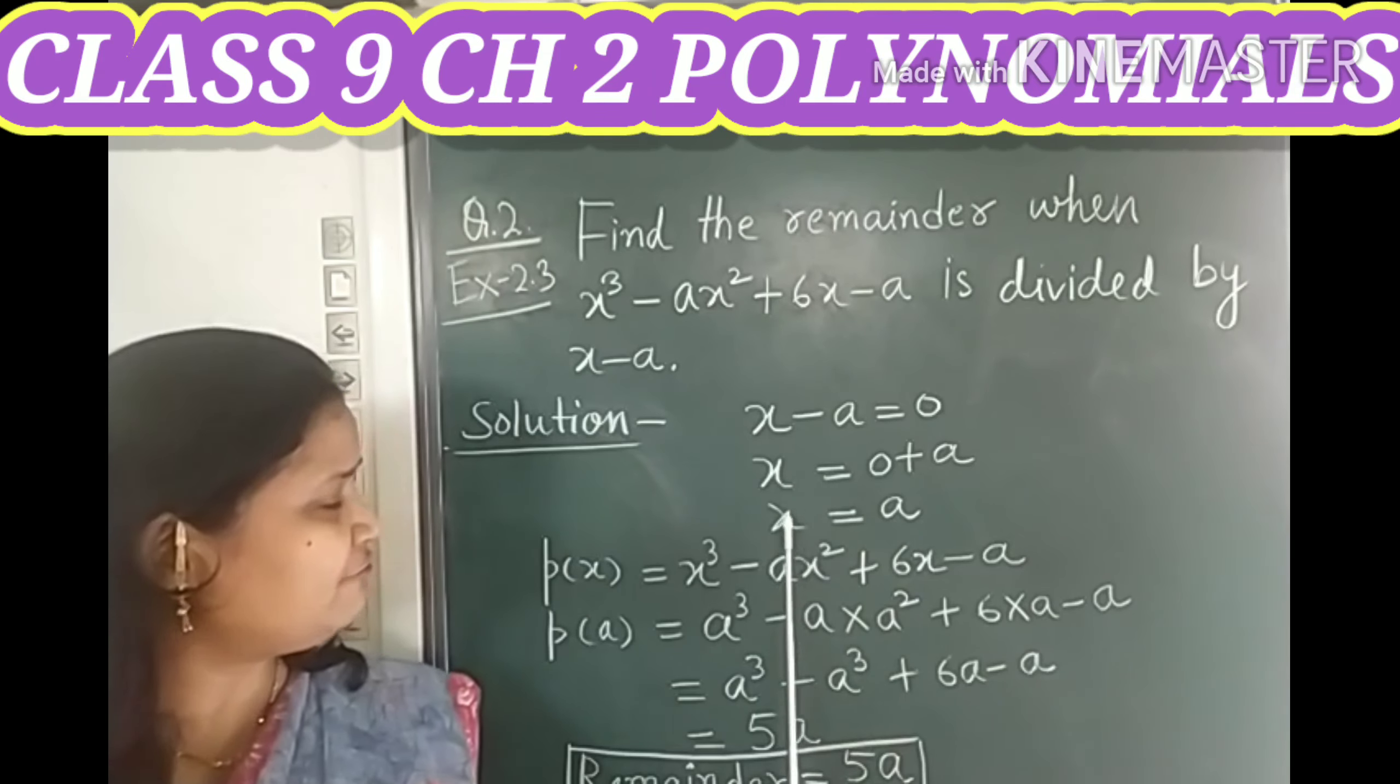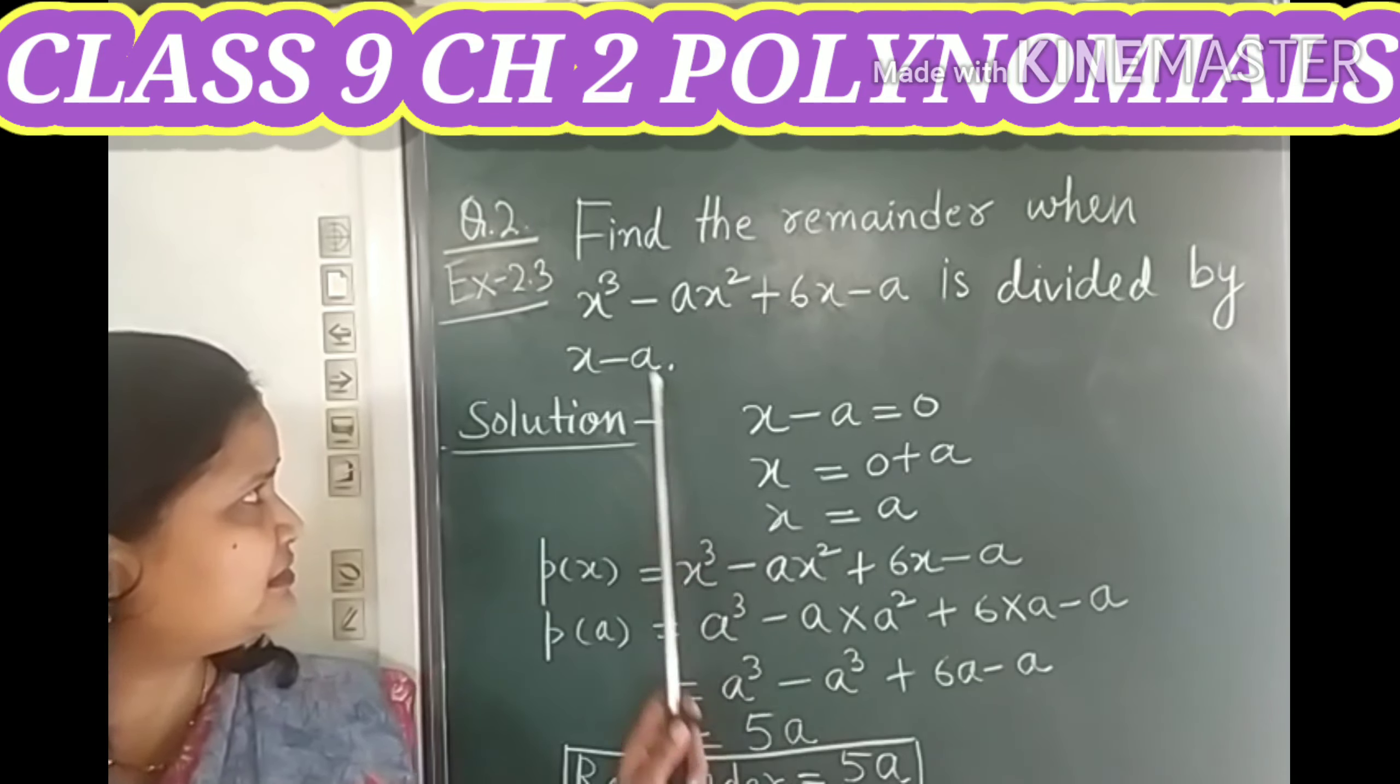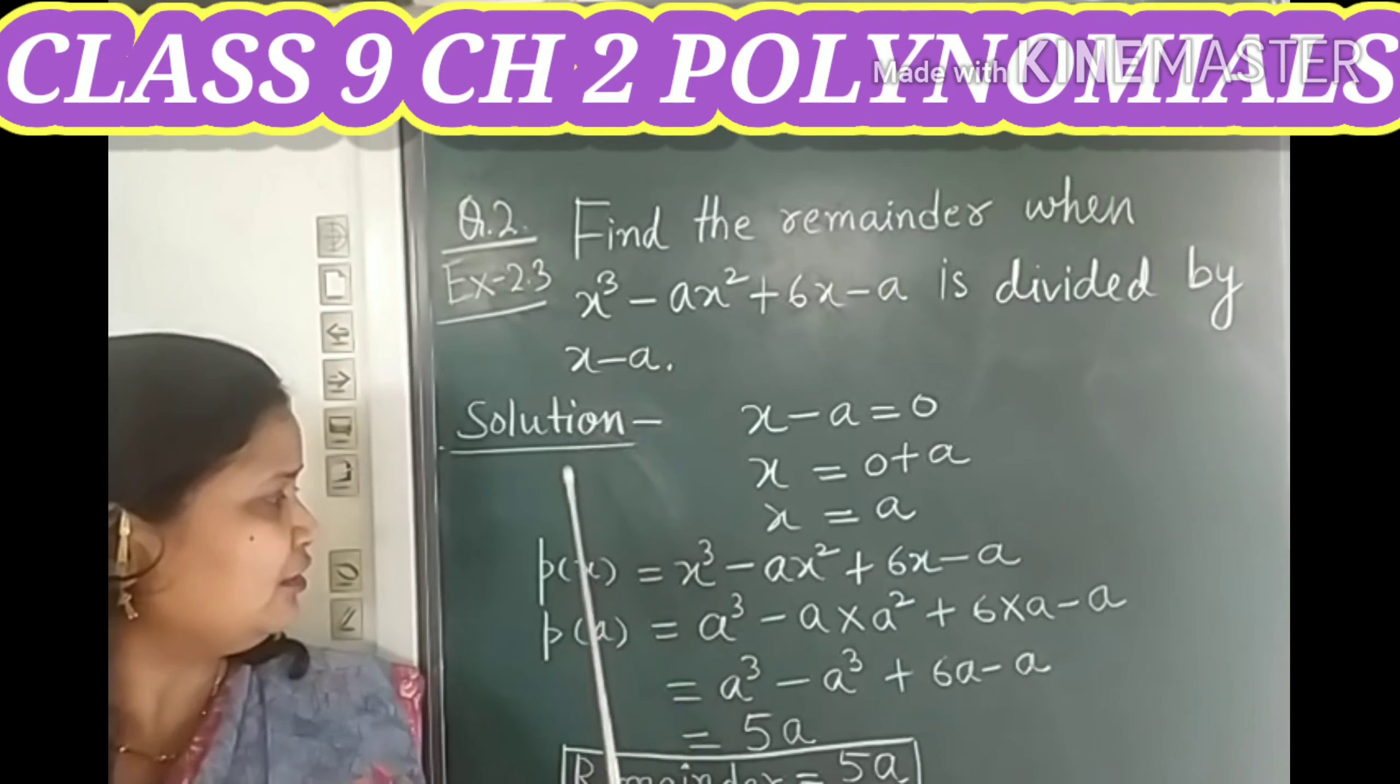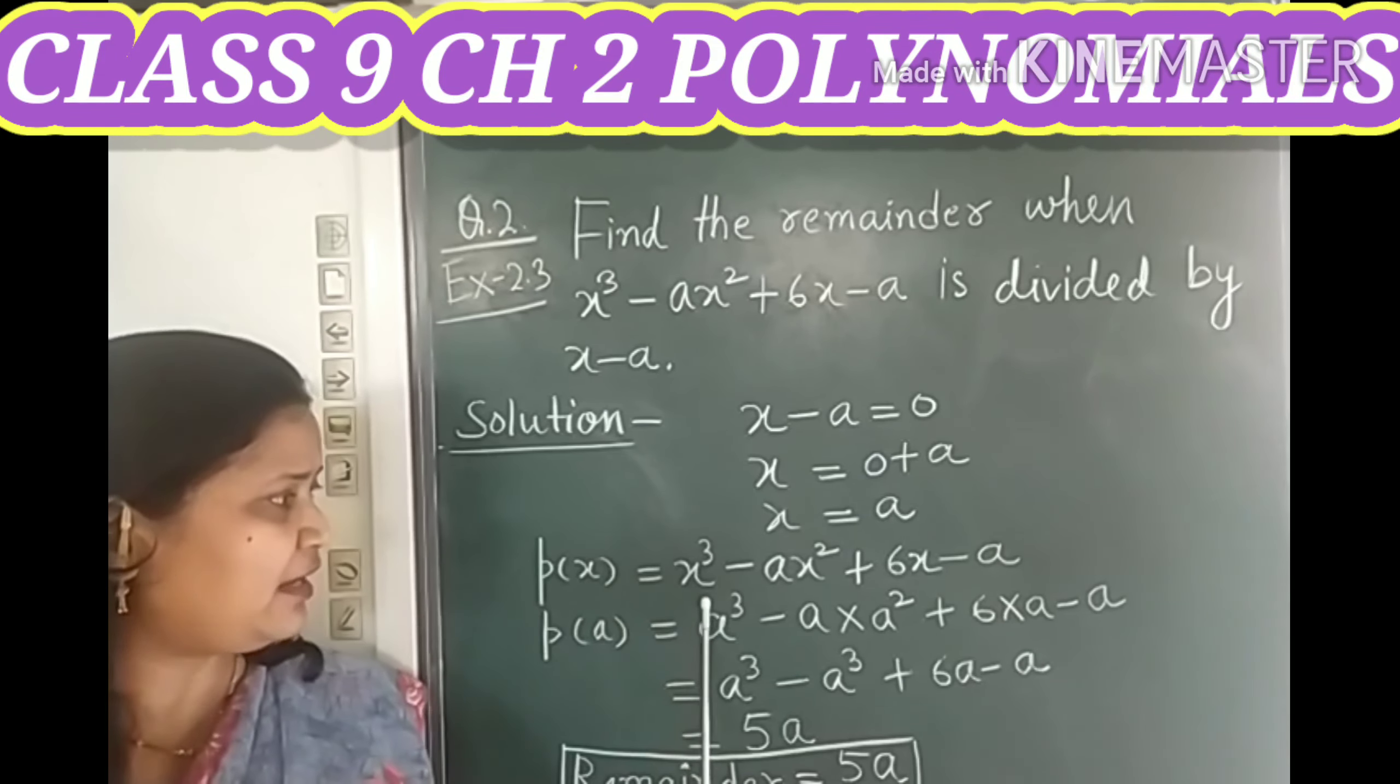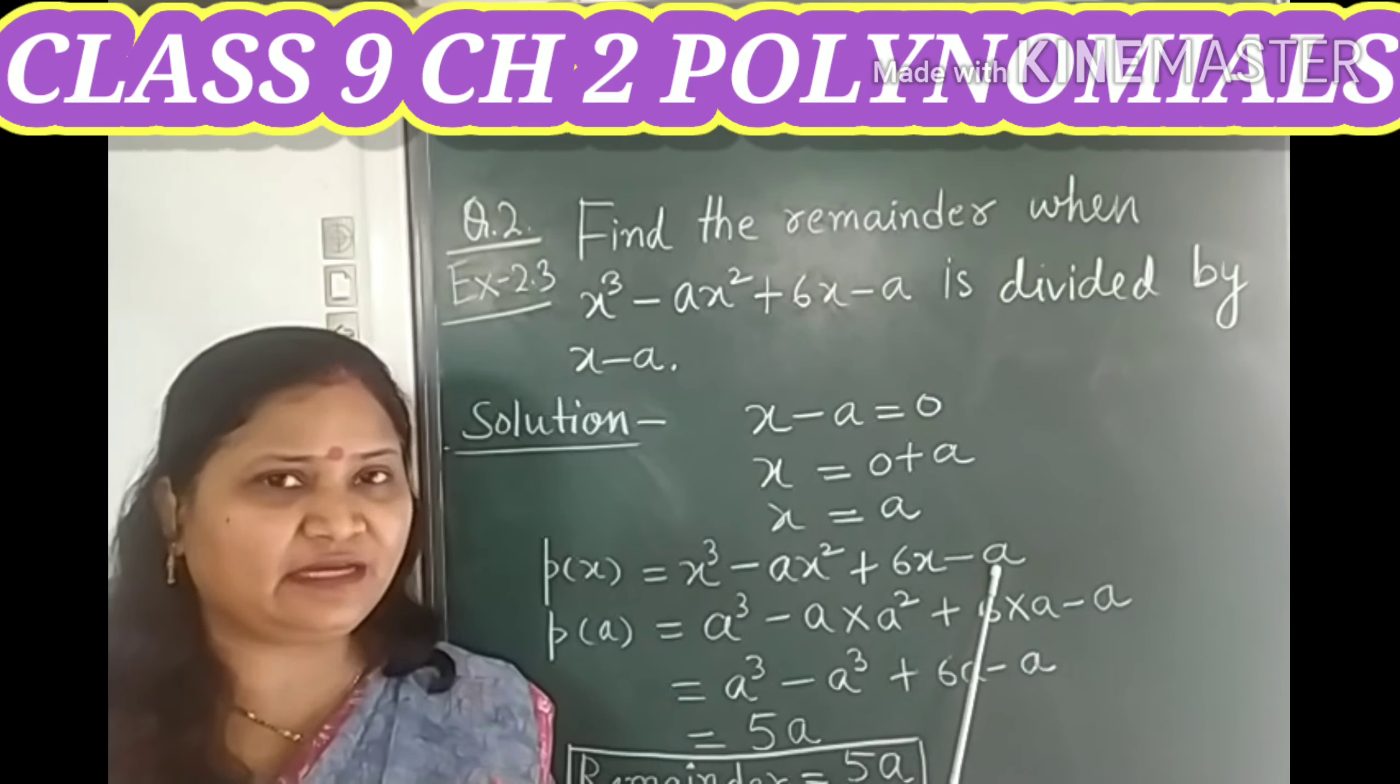Now children, we are to substitute this value of x in this cubic polynomial which we are given. So our cubic polynomial which is given, p(x) = x³ - ax² + 6x - a.